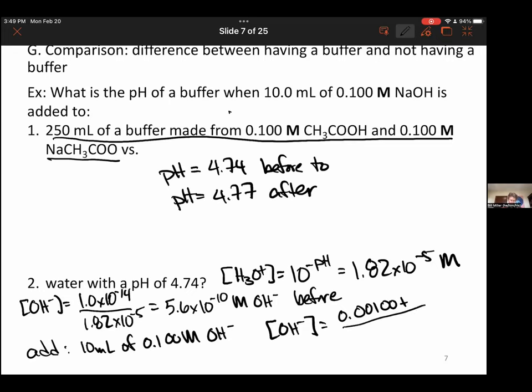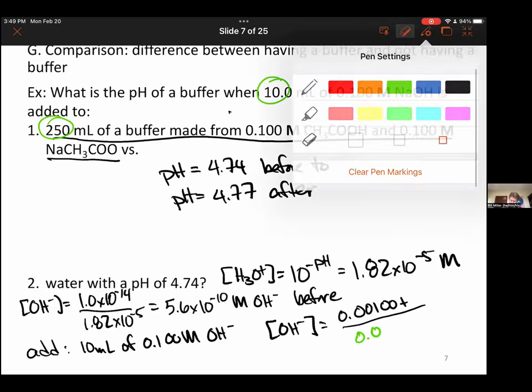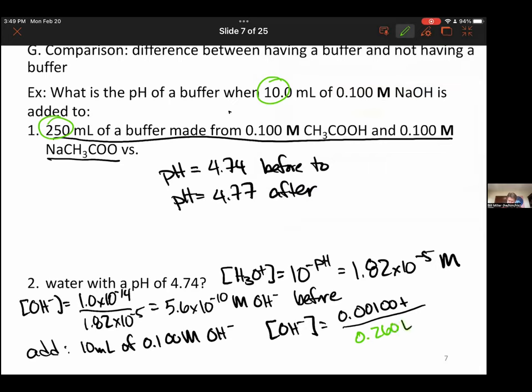And now I'm going to have a total solution volume of, I add 250 and I added 10, so that's going to be 260 liters. And plus, when I say plus there, it's going to be plus something related to this concentration, which will be very small. And I get 0.001 divided by 0.26, I get 0.00385.